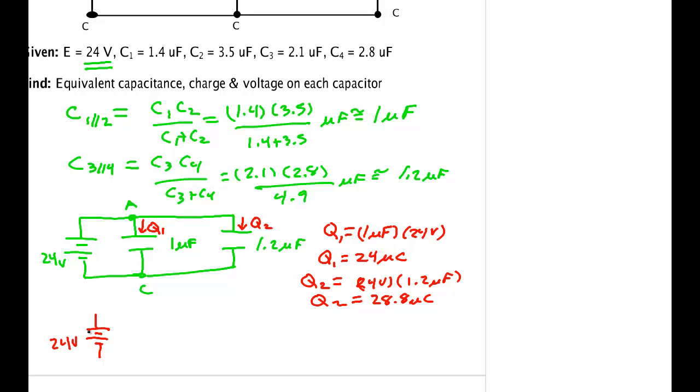Now we can combine this into a single capacitor with 24 volts. The total capacitance equals 1 microfarad plus 1.2 microfarads, which equals 2.2 microfarads. I've already found the charge on each capacitor.